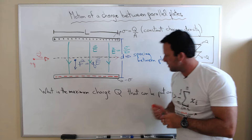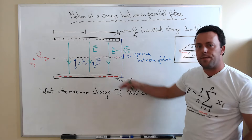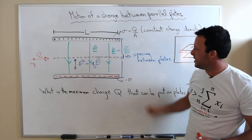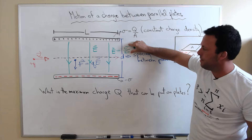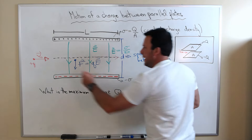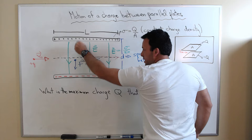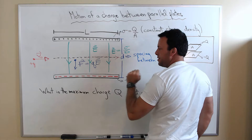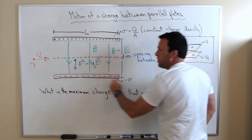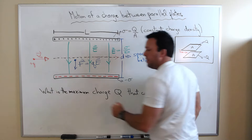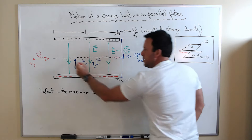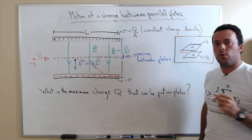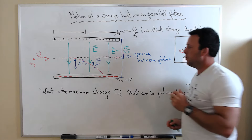This is a special case: if the field is very very big — which it will be if you have a lot of charge on the plates — when the charge enters this region there's going to be a large force on it. There's a repulsive force from the positive plate and an attractive force toward the negative plate. If the field is very very big, the particle is simply going to curve downward and eventually hit the negative plate, which we don't want.